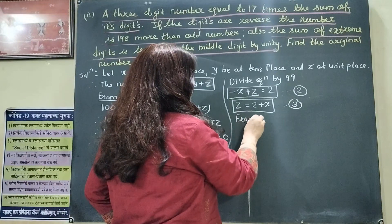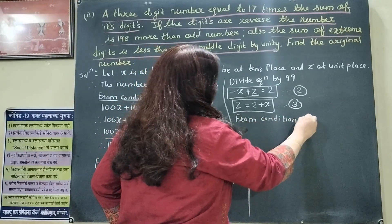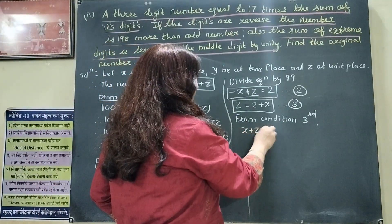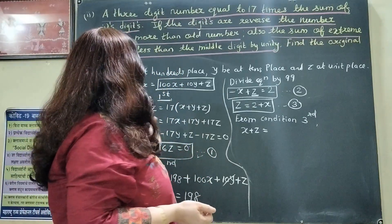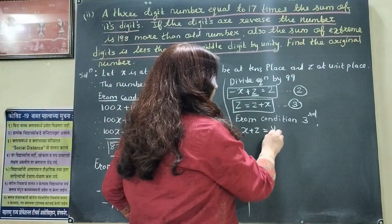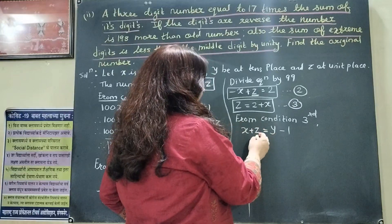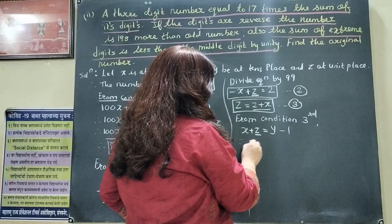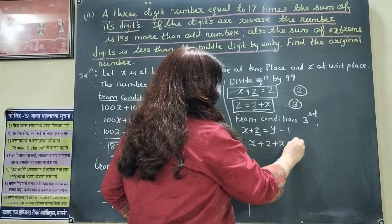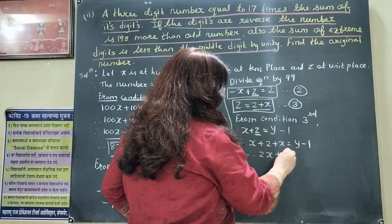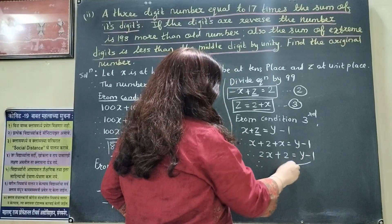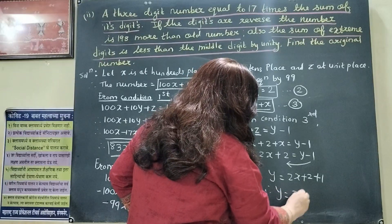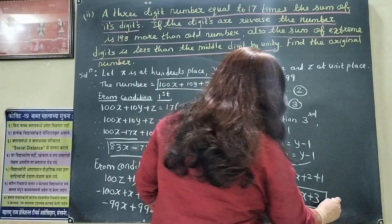From condition 3: the sum of the extreme digits (x and z) is less than the middle digit y by 1. So x plus z equals y minus 1. Substituting z equals 2 plus x: x plus (2 plus x) equals y minus 1, so 2x plus 2 equals y minus 1, therefore y equals 2x plus 3. This is equation 4.